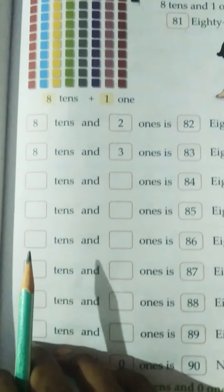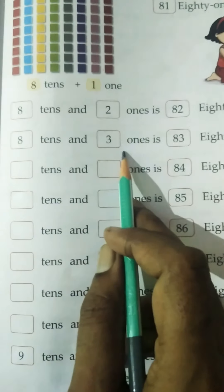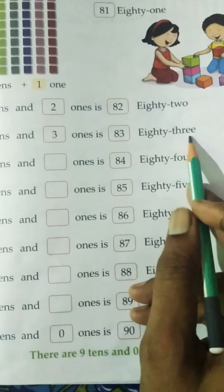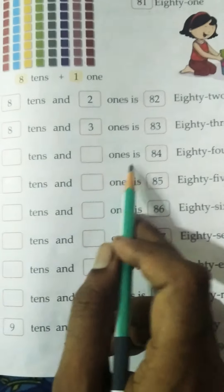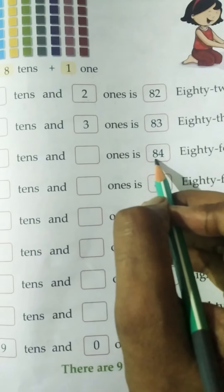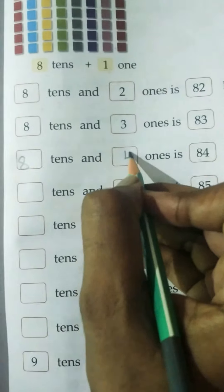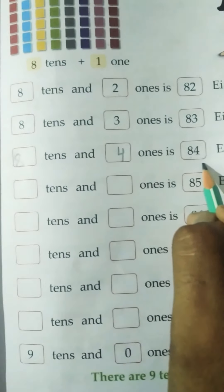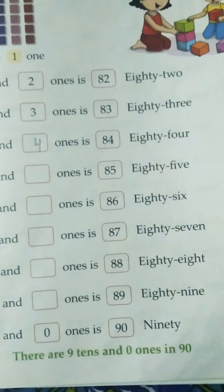So this question you have to do in that way. 8 tens and 3 ones is equal to 83. Spelling: E-I-G-H-T-Y, 80, T-H-R-E-E, 3. Here you have to write how many tens and ones. Number is 84. The 4 is on the ones position, 8 is on the tens position. 8 tens plus 4 ones is equal to 84. Spelling: E-I-G-H-T-Y, 80, F-O-U-R, 4, 84.